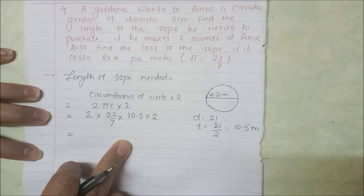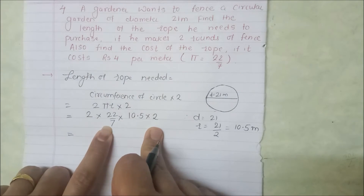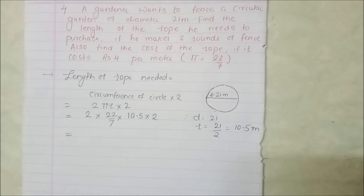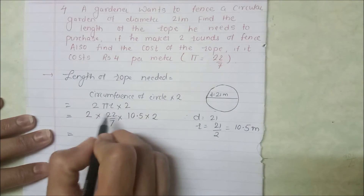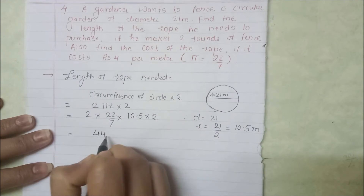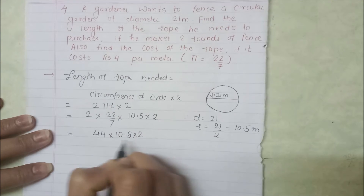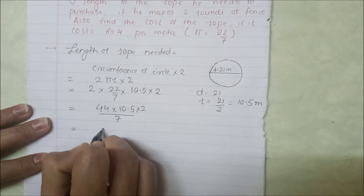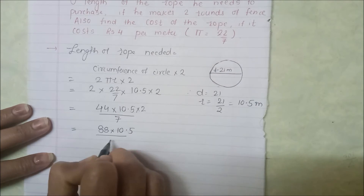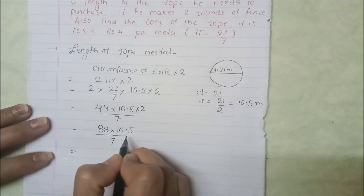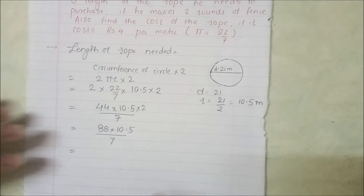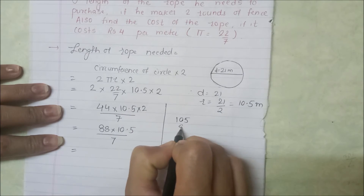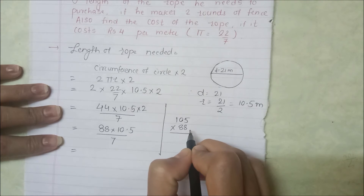अब simplify करते हैं। अगर कुछ कट सकता है तो काट देंगे, नहीं तो ऊपर-ऊपर multiply करेंगे और नीचे 7 से divide करेंगे। तो 2 × 22 = 44, फिर 44 × 2 = 88। अब 88 × 10.5 करना है — point को ignore करके 88 × 105 करेंगे और बाद में point देंगे।